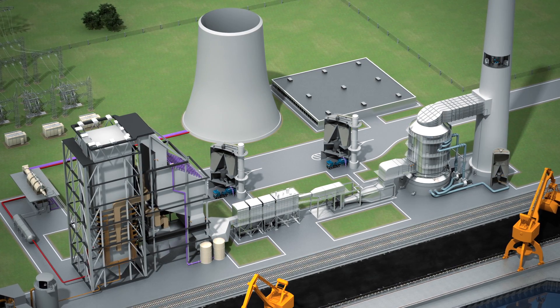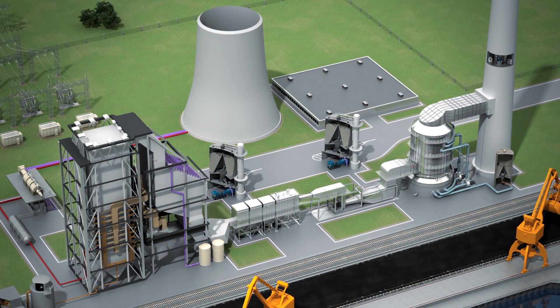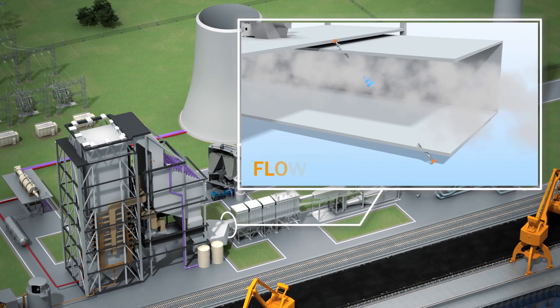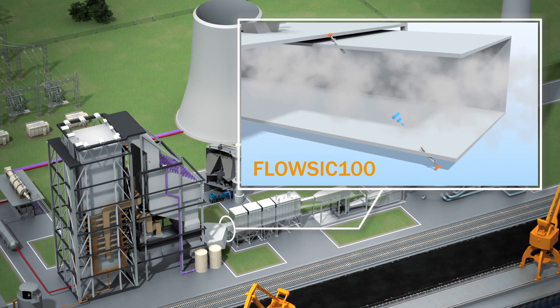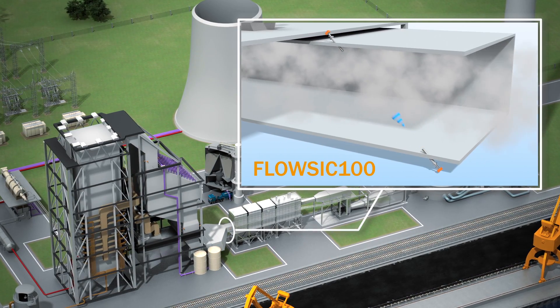In addition, volumetric flow measurement provides the information to calculate mass flow. The volume flow is continuously determined across the complete process duct by means of the flow-sick 100-PHS ultrasonic meter.